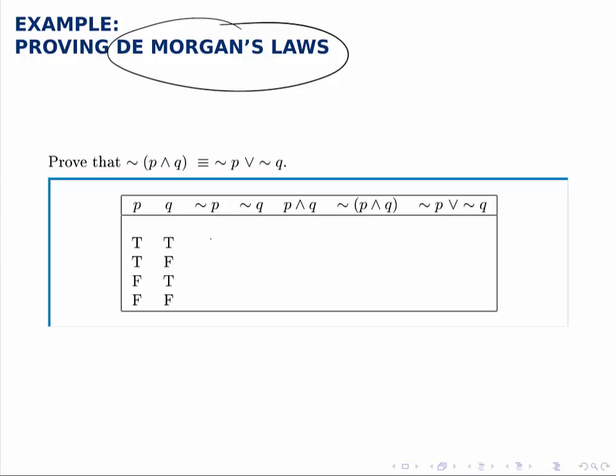First we need the not P column, which we get by negating P. For not Q, we negate Q.